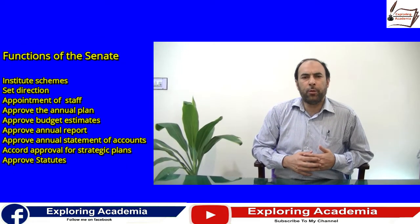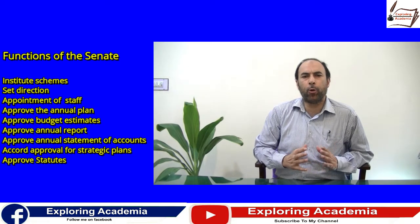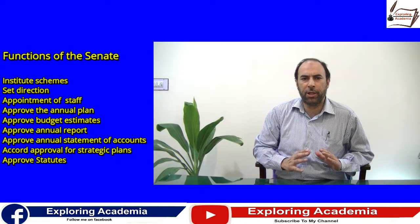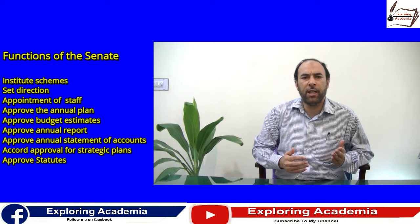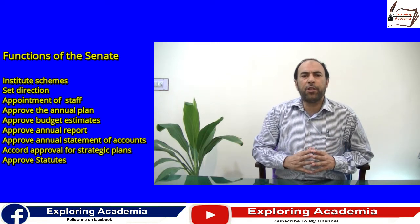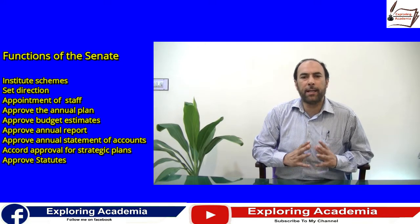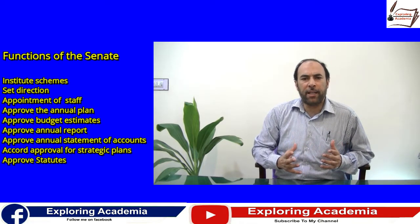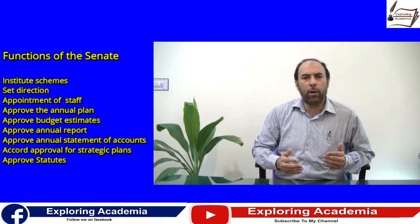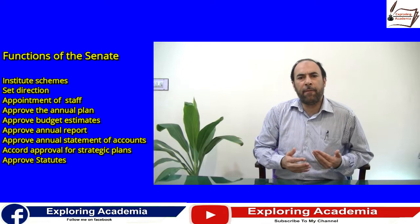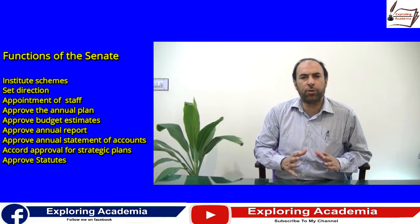In its role of general supervision over the university, the Senate has a critically important role in overall governance. It holds the Vice-Chancellor and other authorities accountable for the university's functioning. The Senate has powers to institute schemes, set direction, and provide guidelines for the terms and conditions of recruitment of officers, teaching faculty, and other employees. It approves the proposed annual plan of work, annual and revised budget estimates, annual reports, annual statement of accounts, and accords approval for the strategic plan, financial resource development plans, and the statutes of the university.